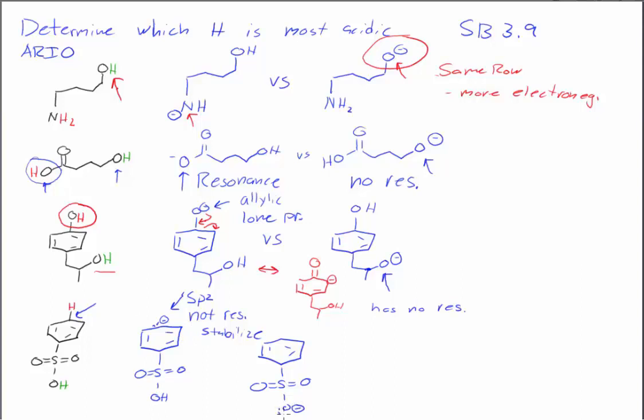Whereas down here, we've got some lone pairs. And we can show some resonance happening. I'm not going to show all three structures, but I'll show you the second one. We can put the negative charge on the left oxygen.